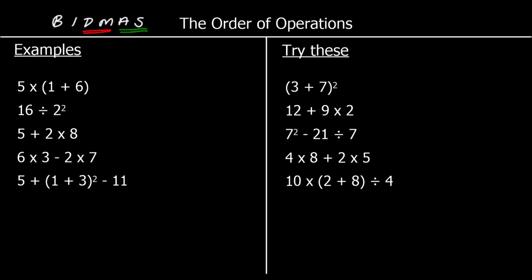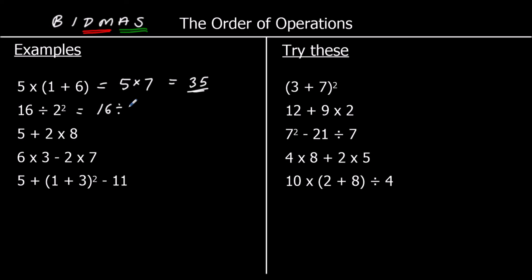Let's look at these examples. The first one has brackets, and brackets come first. So it's 5 times, and 1 plus 6 is 7, so we've got 5 times 7, which is 35. The second one has no brackets but we do have indices — 16 divided by 2 squared. 2 squared is 4, so we've got 16 divided by 4, which is 4.